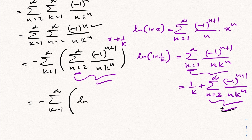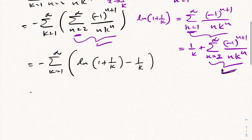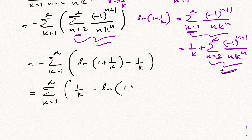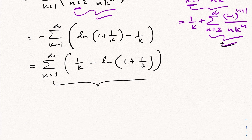Multiplying by the minus sign, we arrive at the infinite sum from k equals 1 to infinity of 1 over k minus natural log of 1 plus 1 over k. This is the very famous infinite sum that Euler found, and it equals the Euler-Mascheroni constant. This is the answer for this series. If you like this type of video, please subscribe to this channel. Thank you for watching.